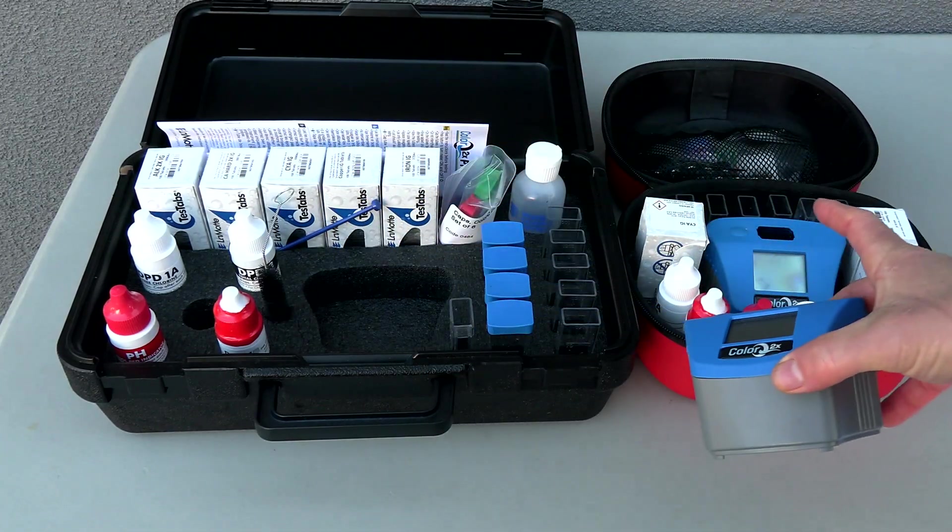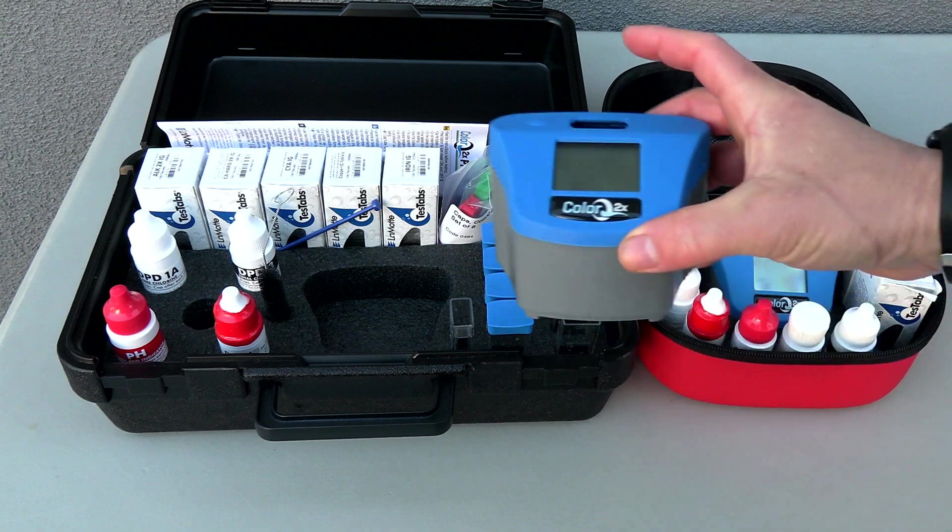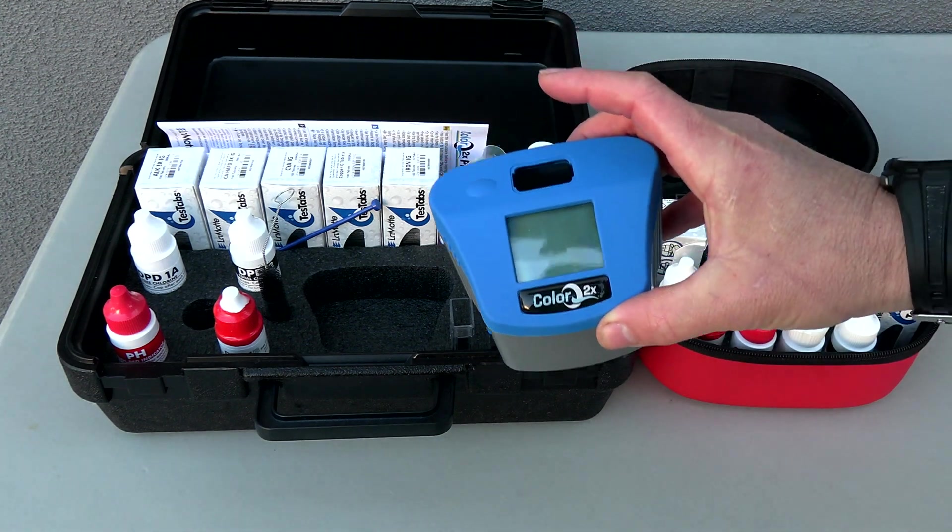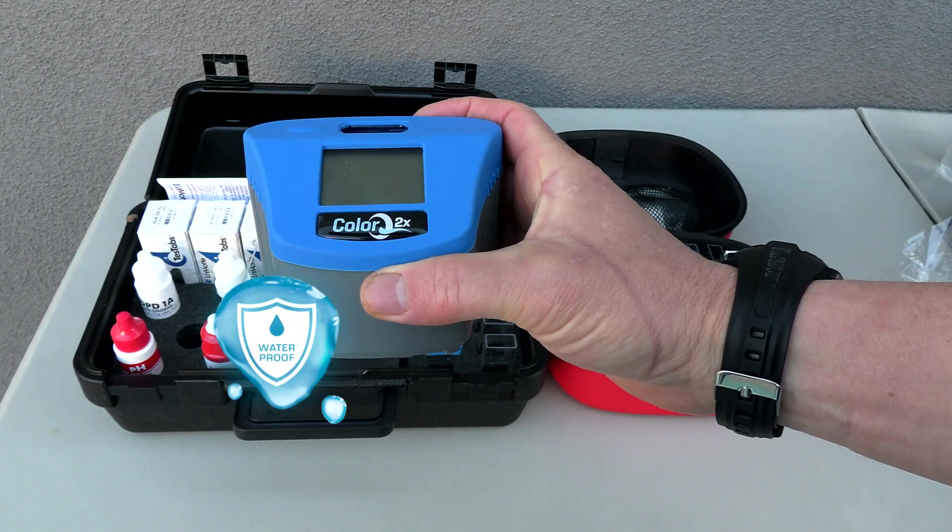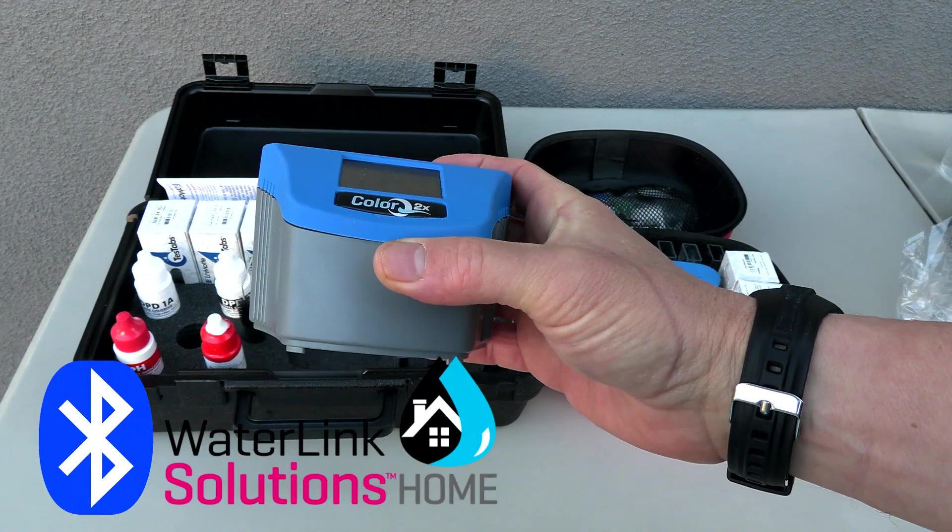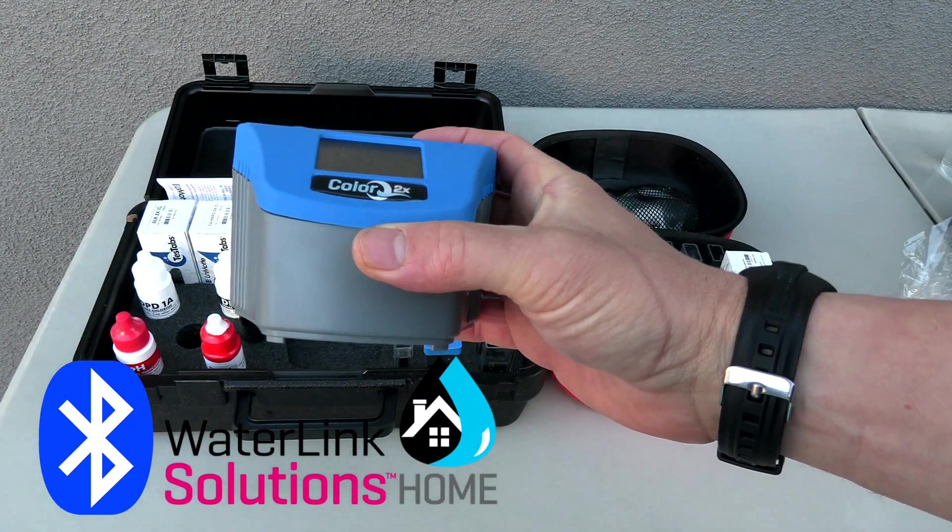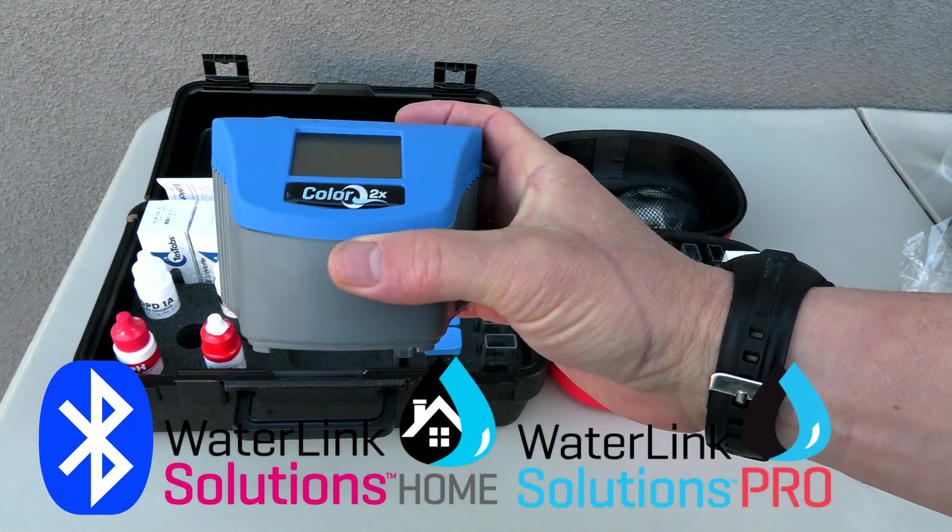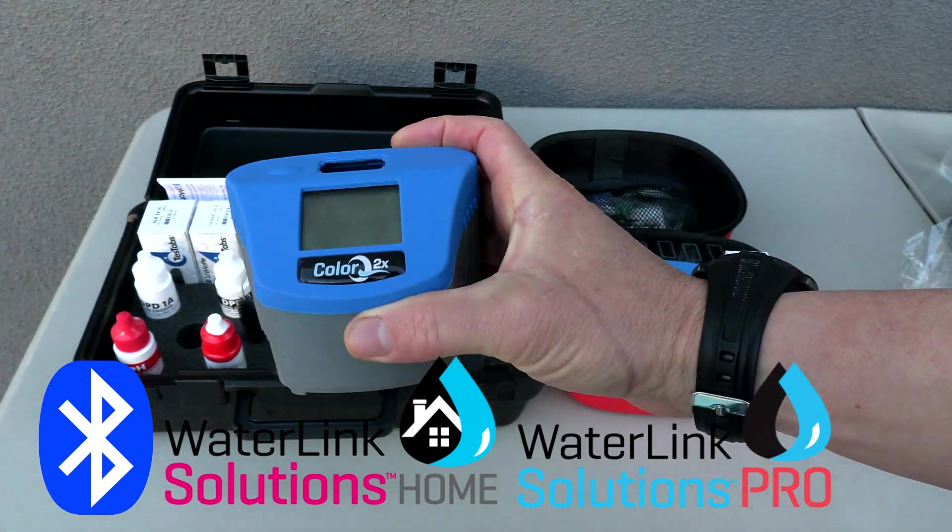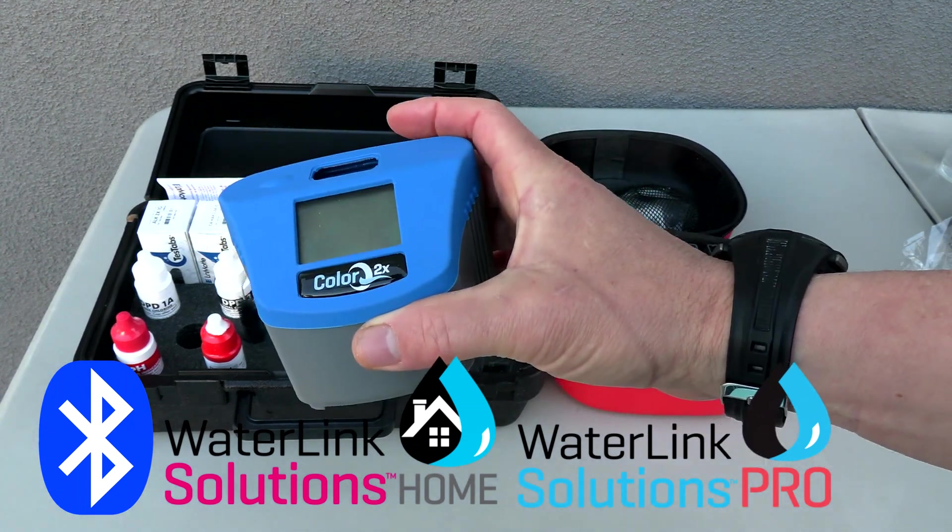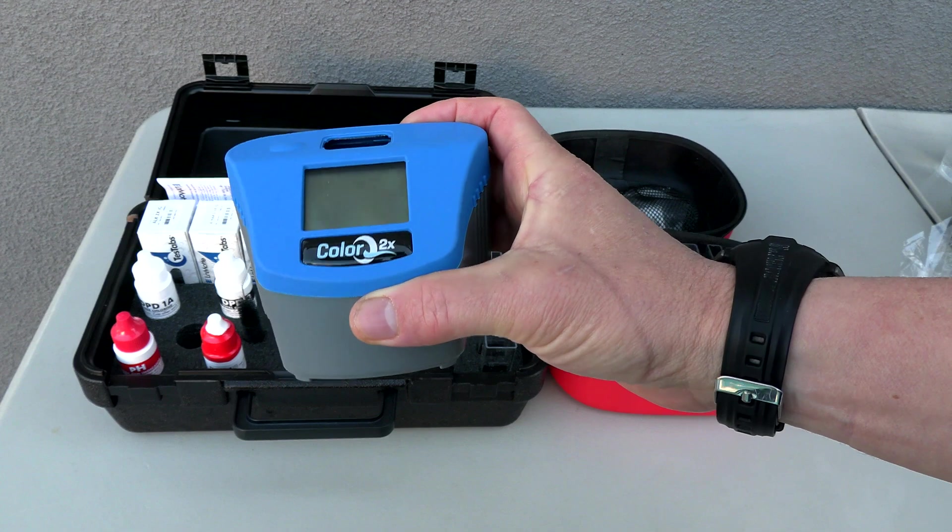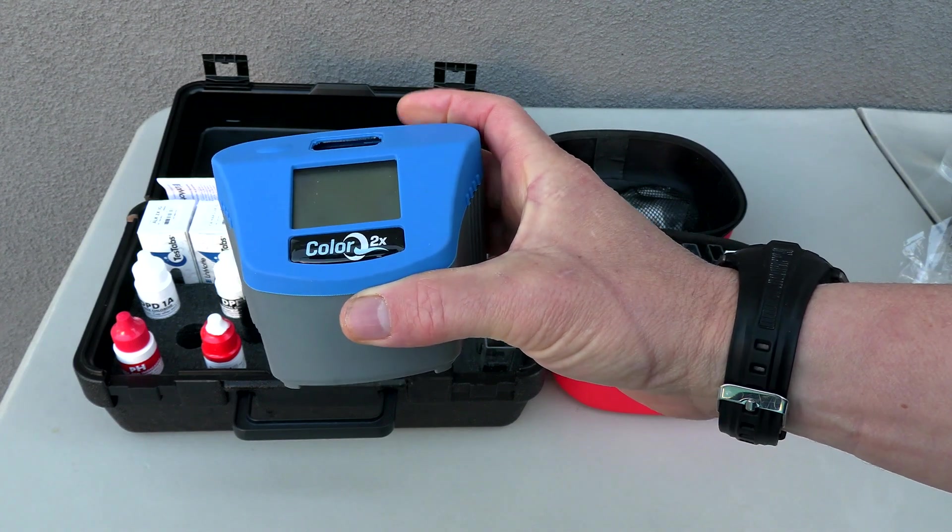The photometer that comes with the Pro 9 is the same photometer that comes with the Pro 7. The only difference is that the Color Q Pro 9 does more test factors. The new photometer is completely waterproof and Bluetooth enabled. If you have the WaterLink Solutions Home app or WaterLink Solutions Pro app, you can send the readings from your pool over to the app and record it. You can email it to yourself or to your client. This is a great way to electronically keep a record of the readings you get from the pools on your pool route.